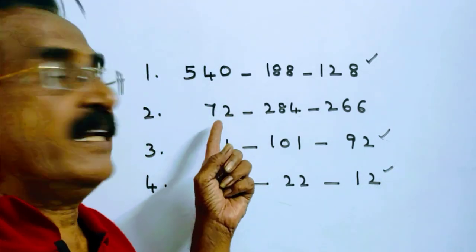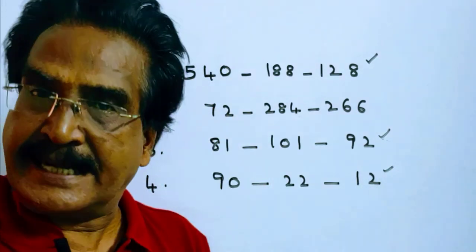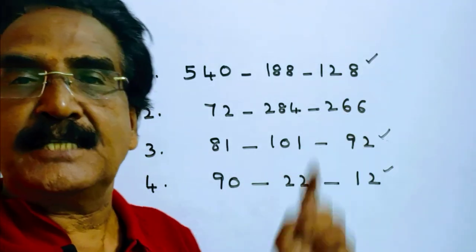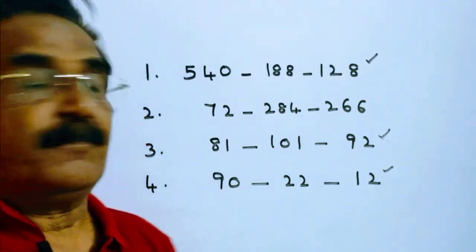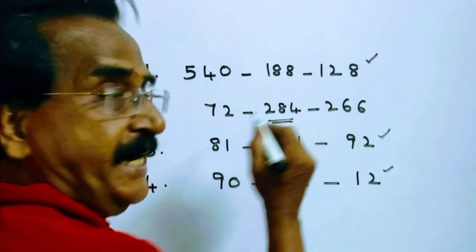But whereas, if you take this one, 72 divided by 9 equals 8. 8 plus 266 equals 274, but it is given as 284.